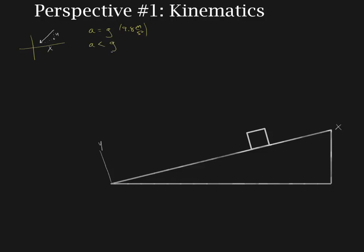This is why we had our discussion on vectors, because you need to understand how to look at a vector and break it up into components, and if necessary recombine them to form the vector you are looking for. This ramp creates an angle of theta relative to a horizontal line. The force of gravity, which causes the acceleration, is always going to be pointing straight down — so g is in that direction.